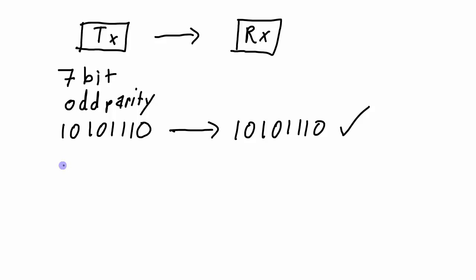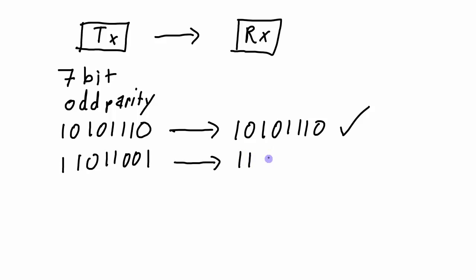As another example, if the data to transmit is 1, 1, 0, 1, 1, 0, 0, there are 4 ones — an even number — so we add a parity bit of 1 to get 5 ones total. If this is transmitted but the receiver gets 1, 1, 0, 1, 1, 0, 0, 0, it counts 4 ones, which is even. Since this is an odd parity system, the receiver knows there's a bit error and asks for retransmission.